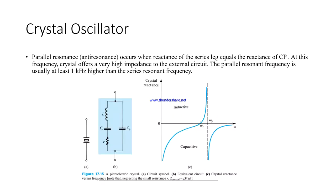Parallel resonance, also called anti-resonance, occurs when the reactance of the series leg equals the reactance of the parallel capacitance CP. At this frequency the crystal offers very high impedance to the external circuit. The parallel resonant frequency is usually at least one kilohertz higher than the series resonant frequency. When the crystal offers high impedance, vibration exists for a certain period of time.